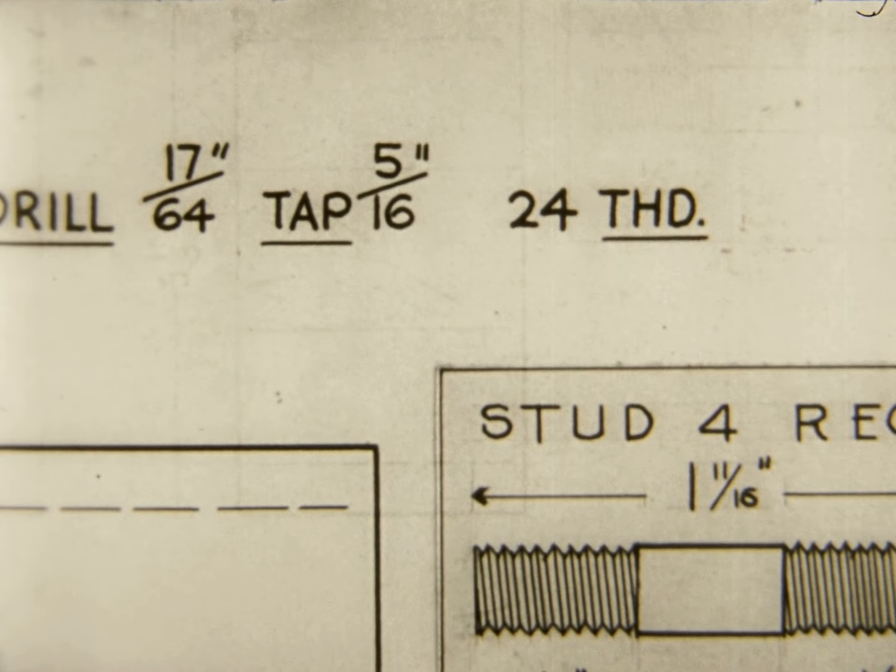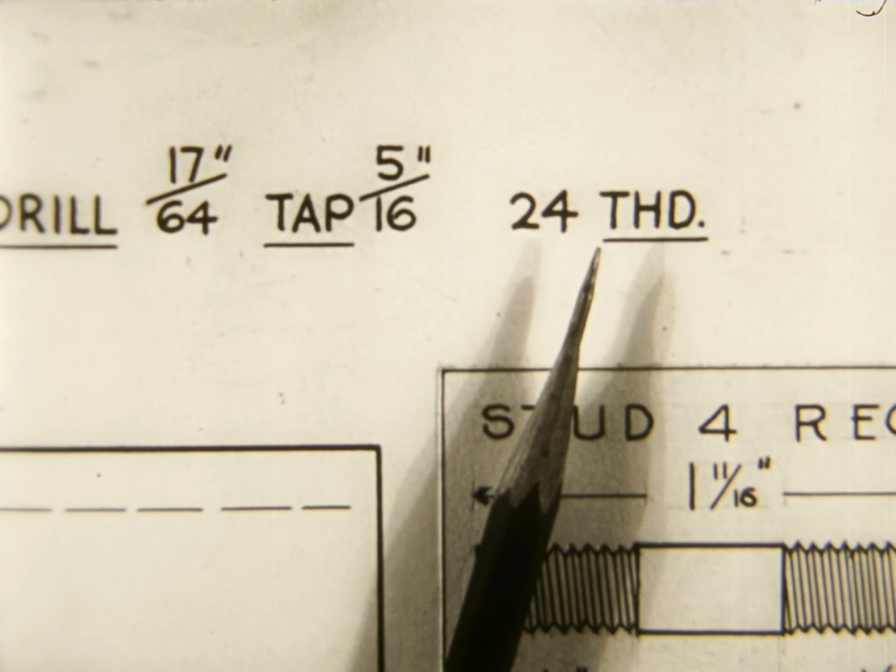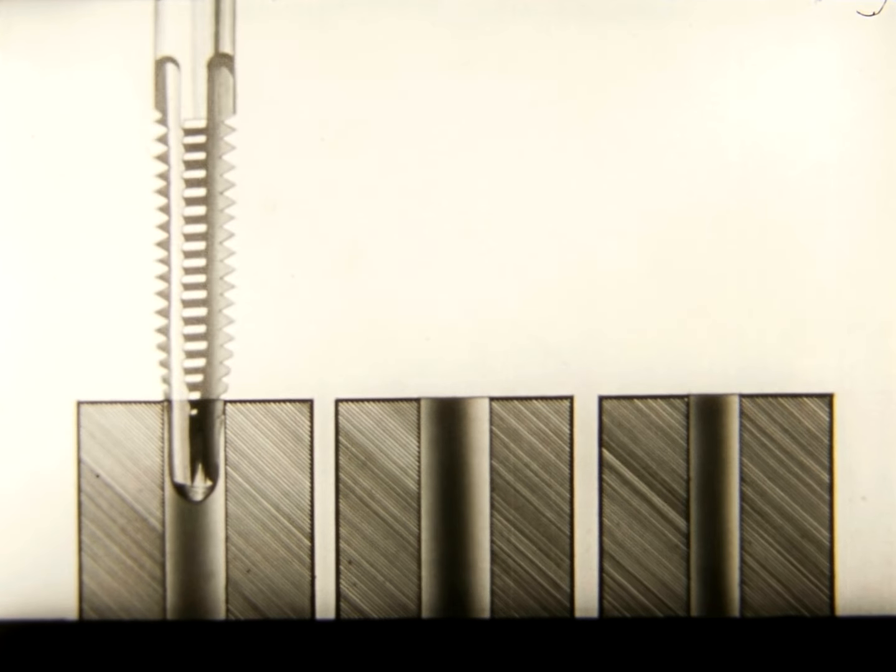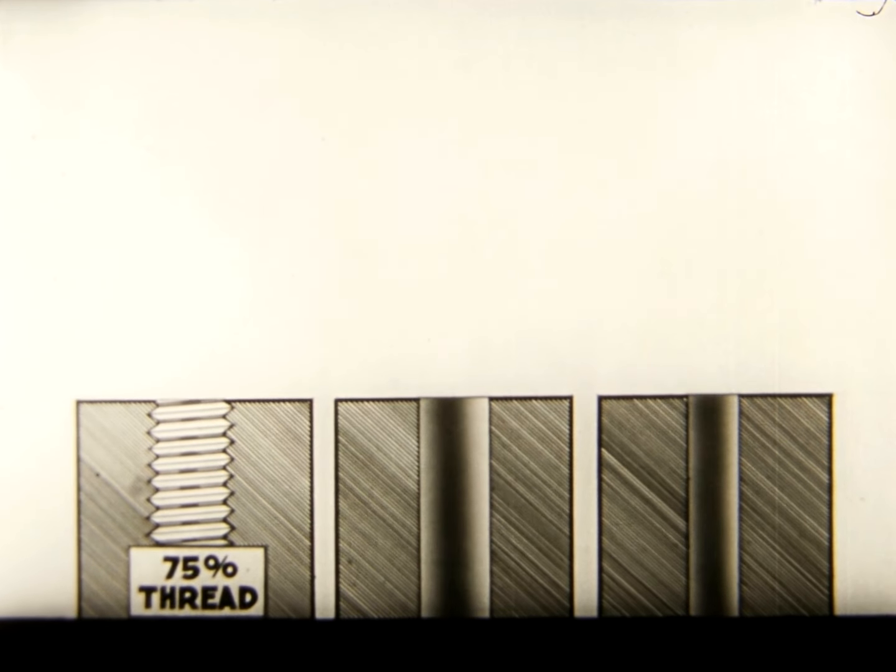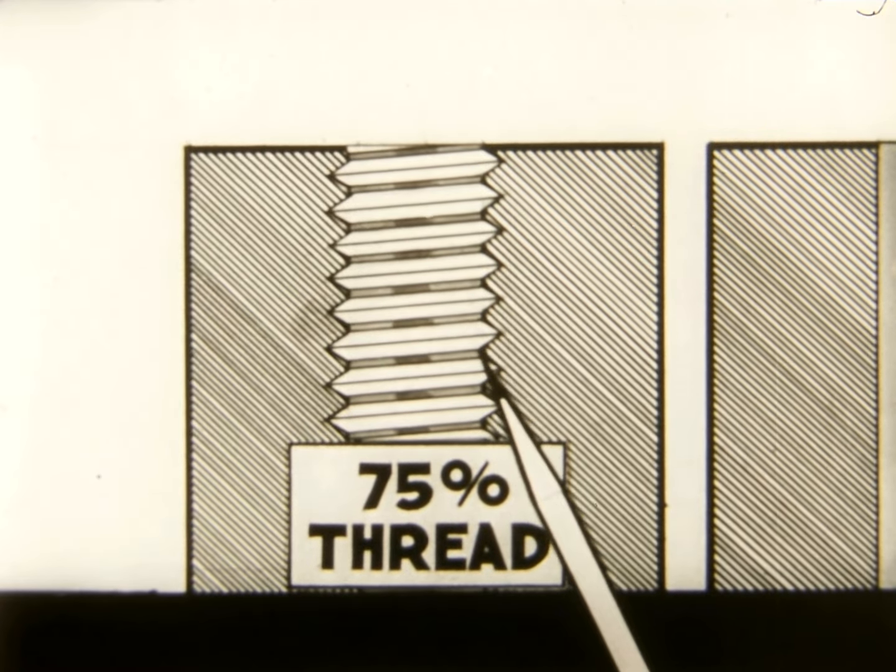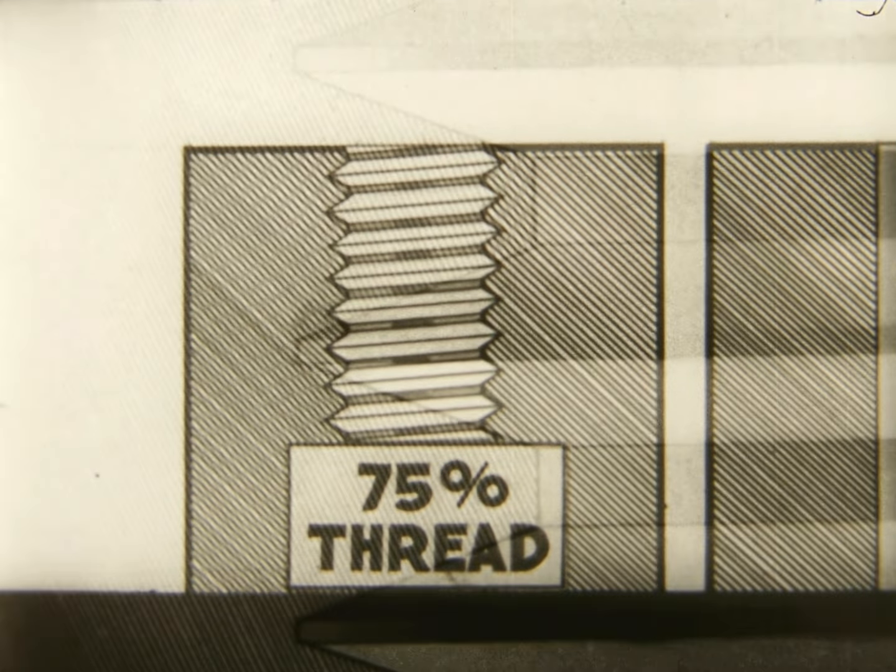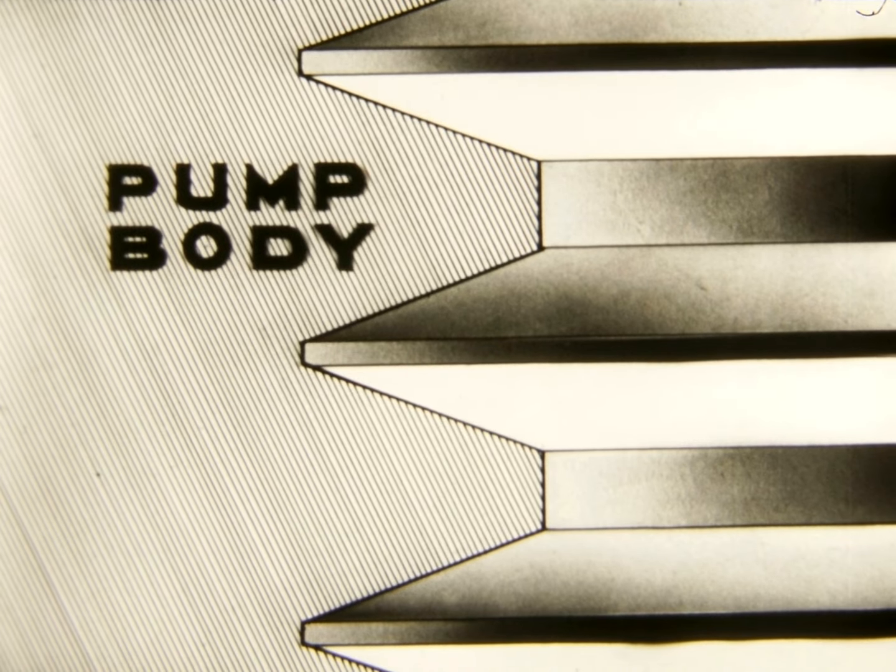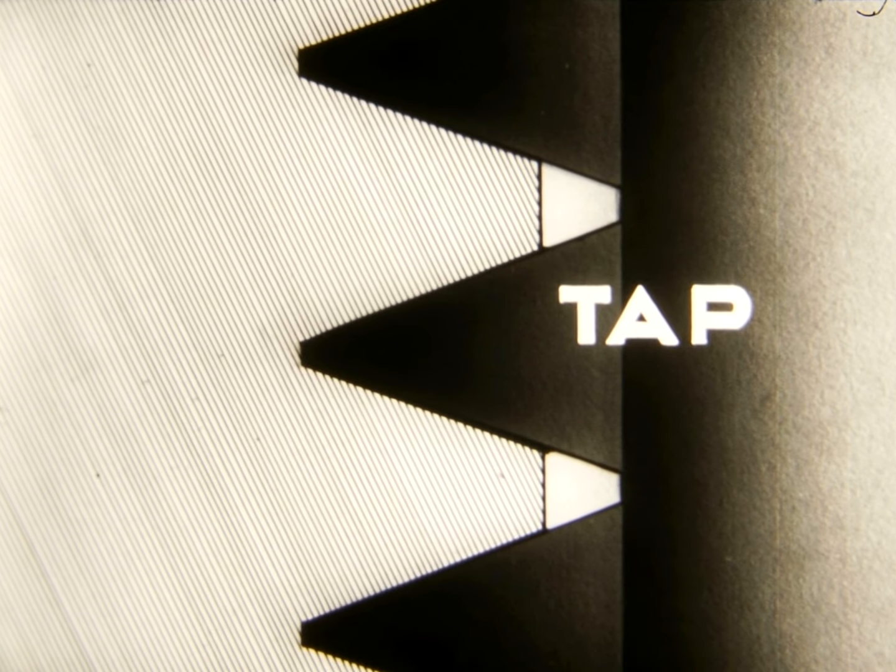This blueprint gives the drill size as 17/64. Some blueprints give only the size and number of threads used on the tap. In this case, you may refer to tables to find the drill size. It should be understood that the size of the drill given provides for a standard 75% fullness of thread. The strength of a threaded connection is determined by the fullness of the threads. In accepted shop practice, a 75% full thread is used for a strong connection. In a 75% thread, the external thread overlaps the internal thread 75% of the full thread depth.